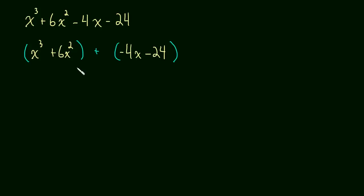And now we factor out of each group what we can. So on the left side, we can get an x squared out of each term. And that just becomes x squared times x plus 6.